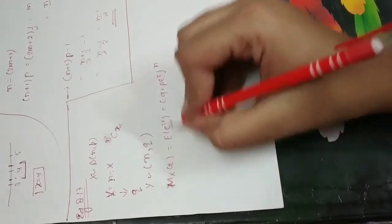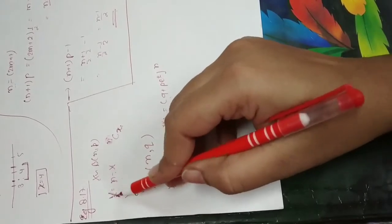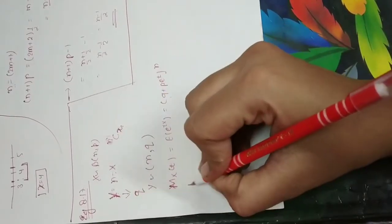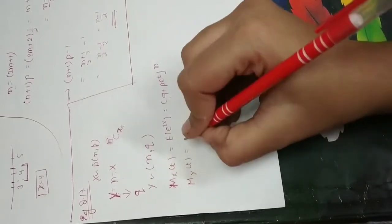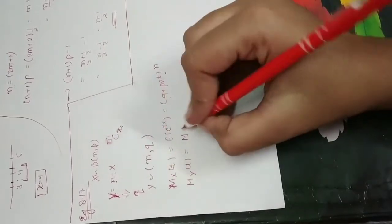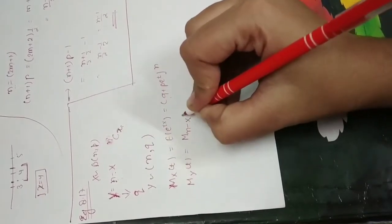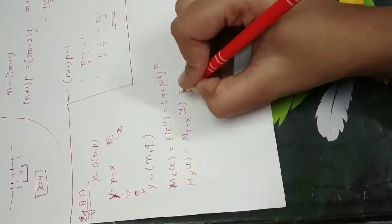Now this is X but we need Y because we need to know Y distribution. So we will write M_Y(t) here. Now what is Y? Y is n minus X. And what will happen in the bracket? t will happen.